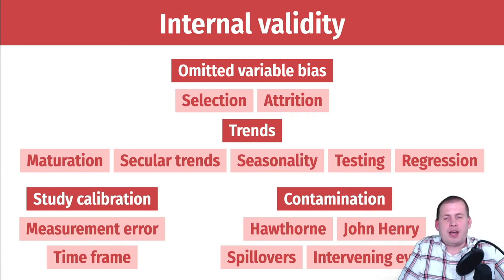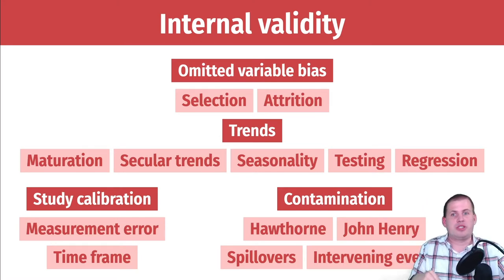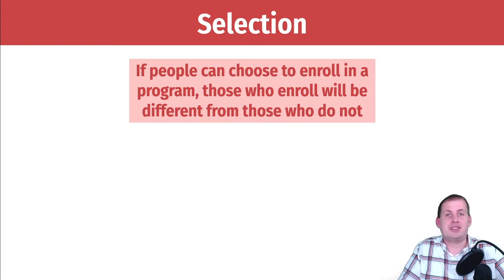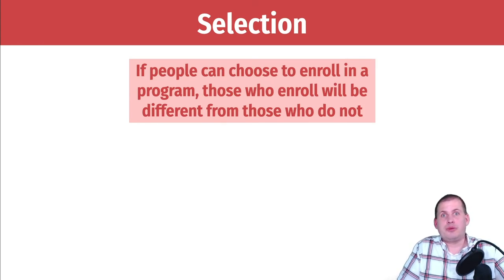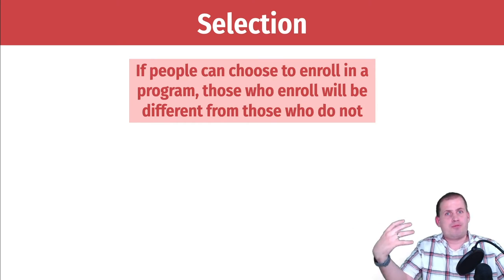We'll structure this as: here's what each issue is, and here's how you can potentially fix it. Selection is the idea that if people can choose to enroll in a program or study, the people who do enroll are going to be fundamentally different from those who do not. For instance, people who sign up for Medicaid are fundamentally different from those who don't. People who volunteer for a medical trial are different from those who don't, because often the people who purposely seek out programs need and want them.